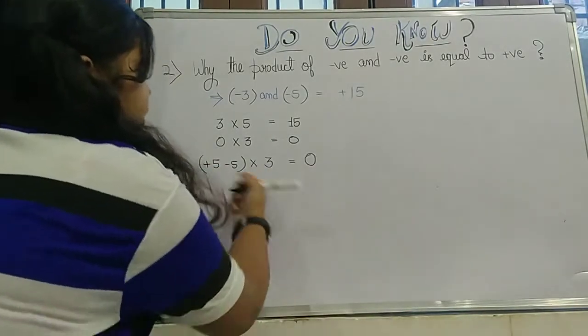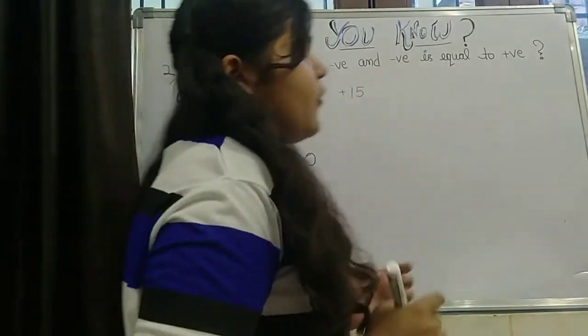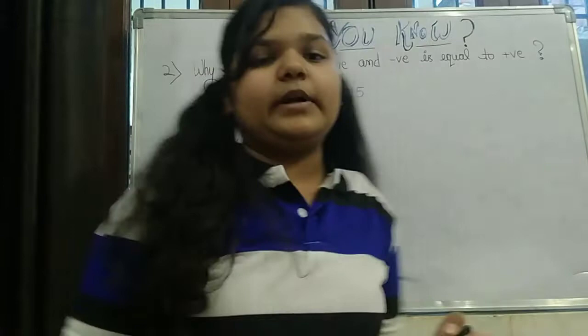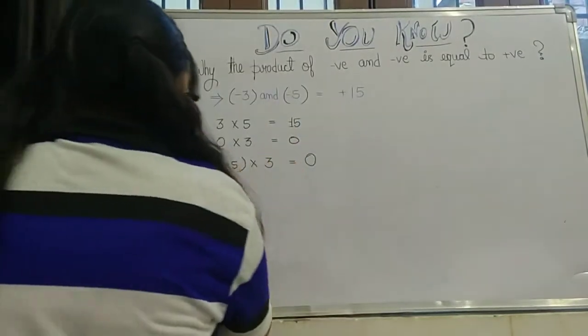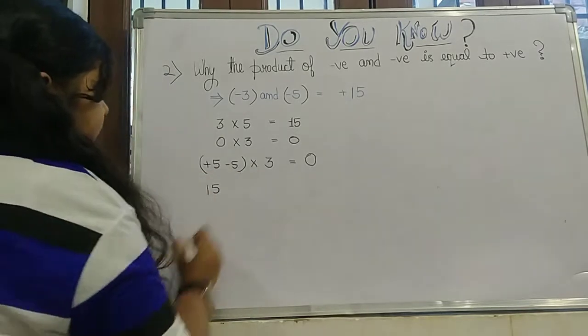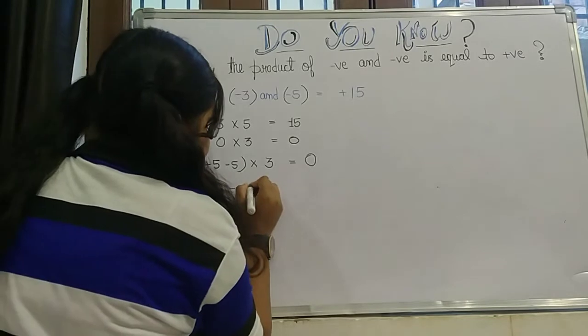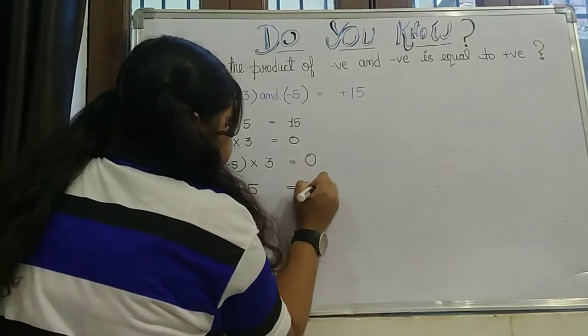Can we use the distributive property here? I have already explained in my previous videos what is actually distributive property. So let's see here. If we use the distributive property, it will become 15, 3 into 5 is 15, and minus 15. Clear?